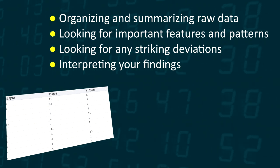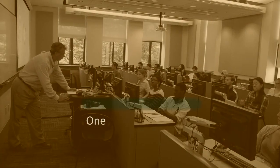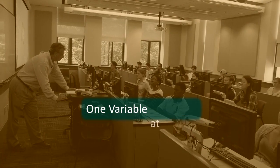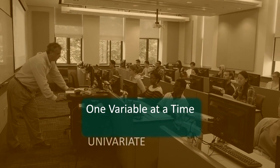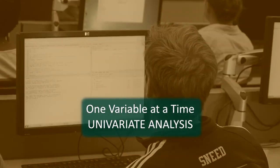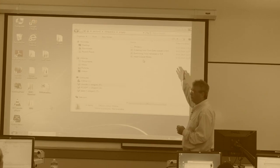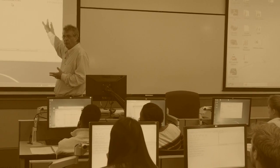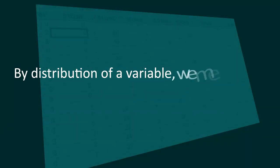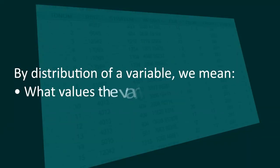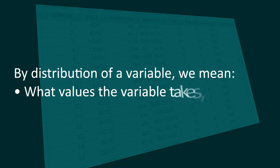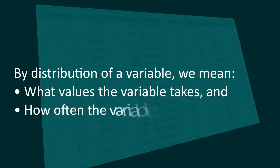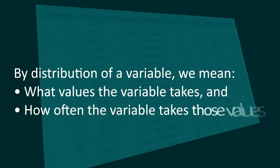We begin exploratory data analysis by looking at one variable at a time, also called univariate analysis. In order to convert raw data into useful information, we need to summarize and then examine the distribution of any variables of interest. By distribution of a variable, we mean what values the variable takes, and how often the variable takes those values.